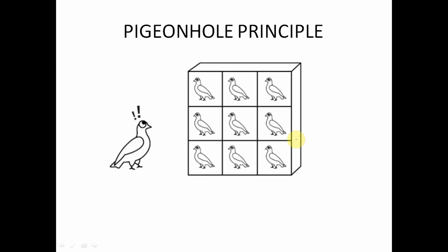The pigeon hole principle says: suppose there are certain pigeons and there are certain pigeon holes. I have some pigeons and I have to place them in some pigeon holes. It simply asks — if the number of pigeons is more than the number of pigeon holes, then what happens?